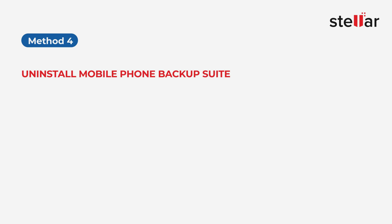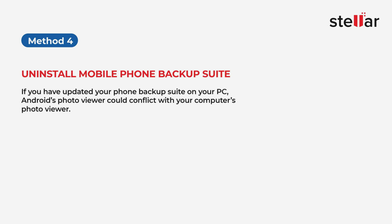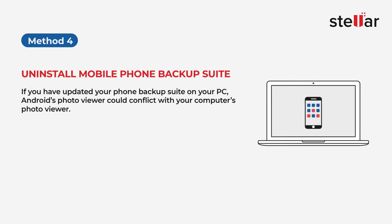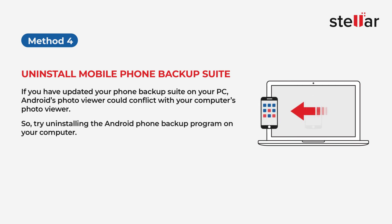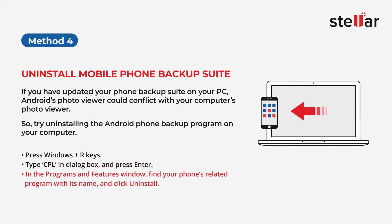Method 4: Uninstall any mobile phone backup suite. If you have updated your phone's backup suite on your PC, Android's Photo Viewer could conflict with your computer's Photo Viewer. Try uninstalling the Android phone backup program. Press Windows + R keys, type 'CPL' in the dialog box, and press Enter. Then, in the Programs and Features window, find your phone's related program by name and click Uninstall.